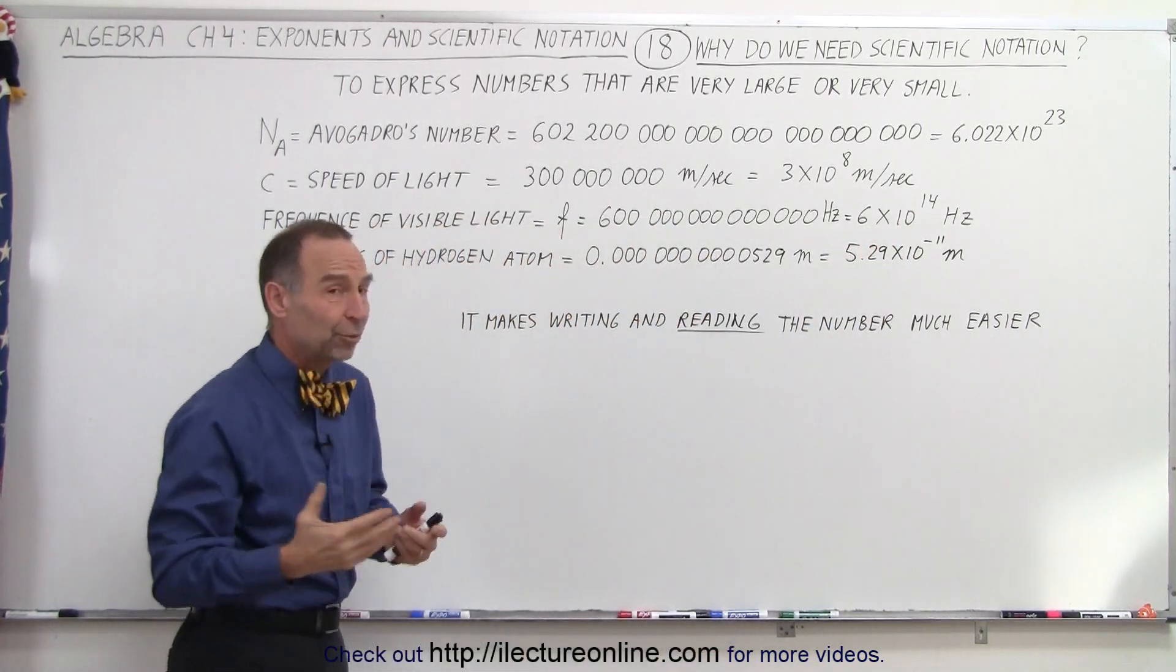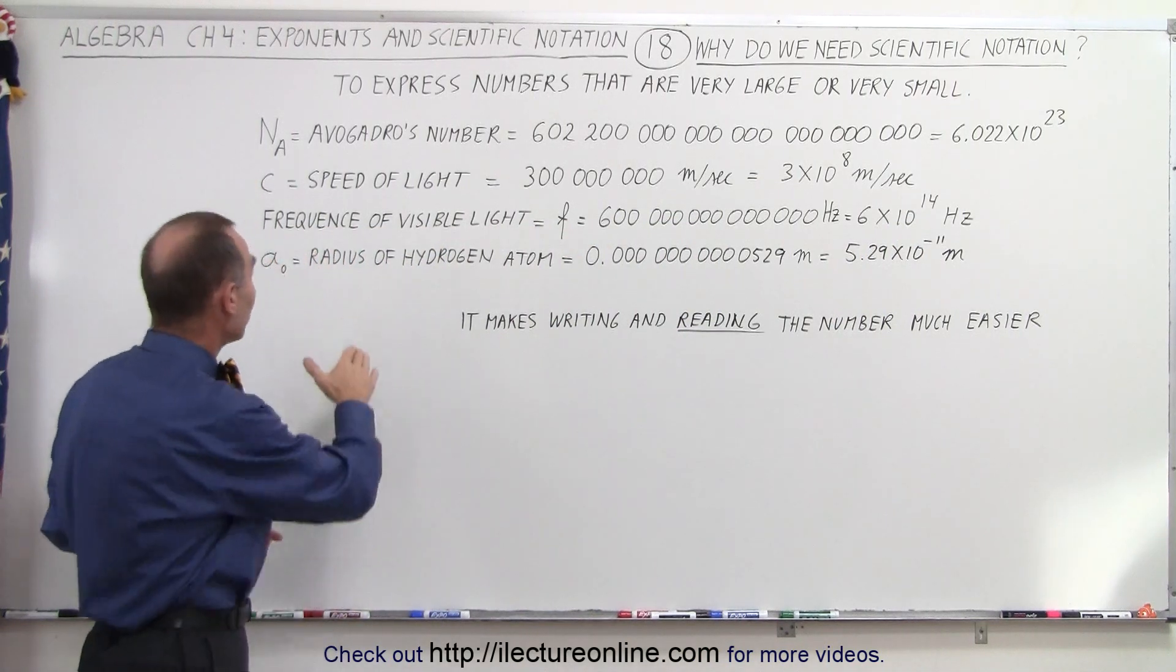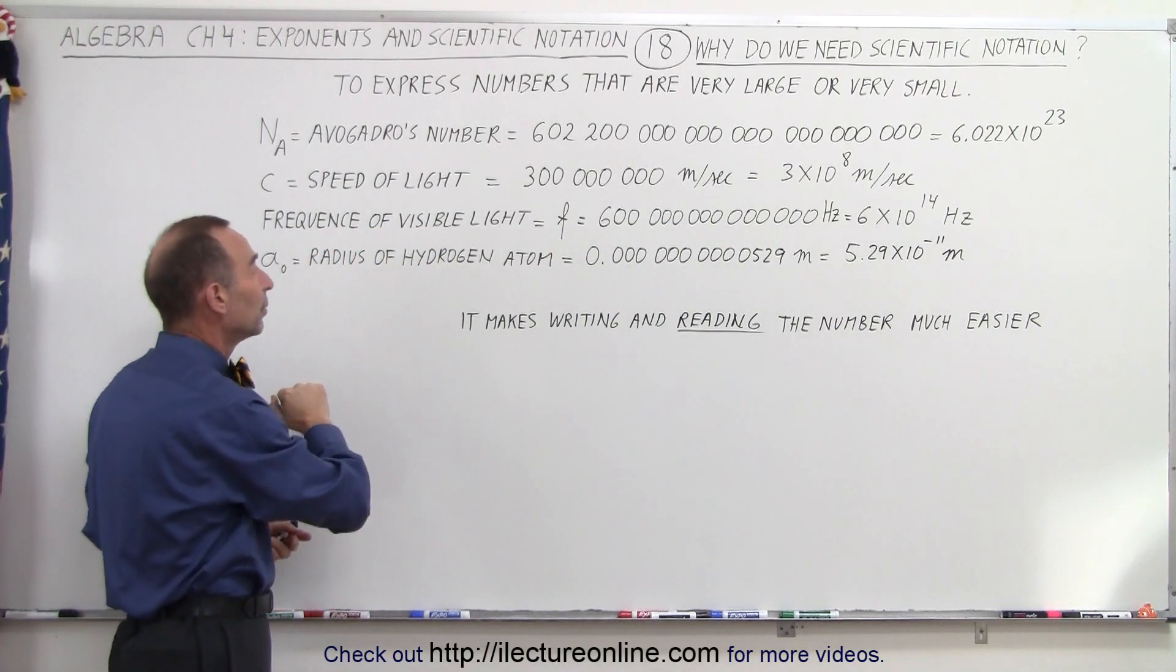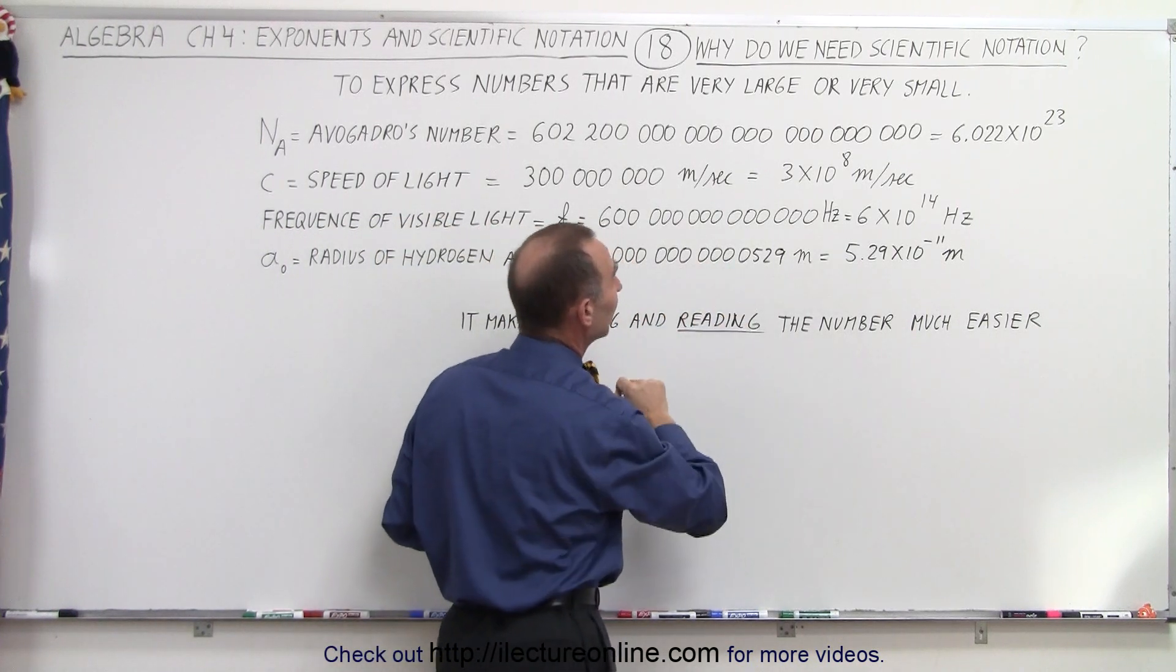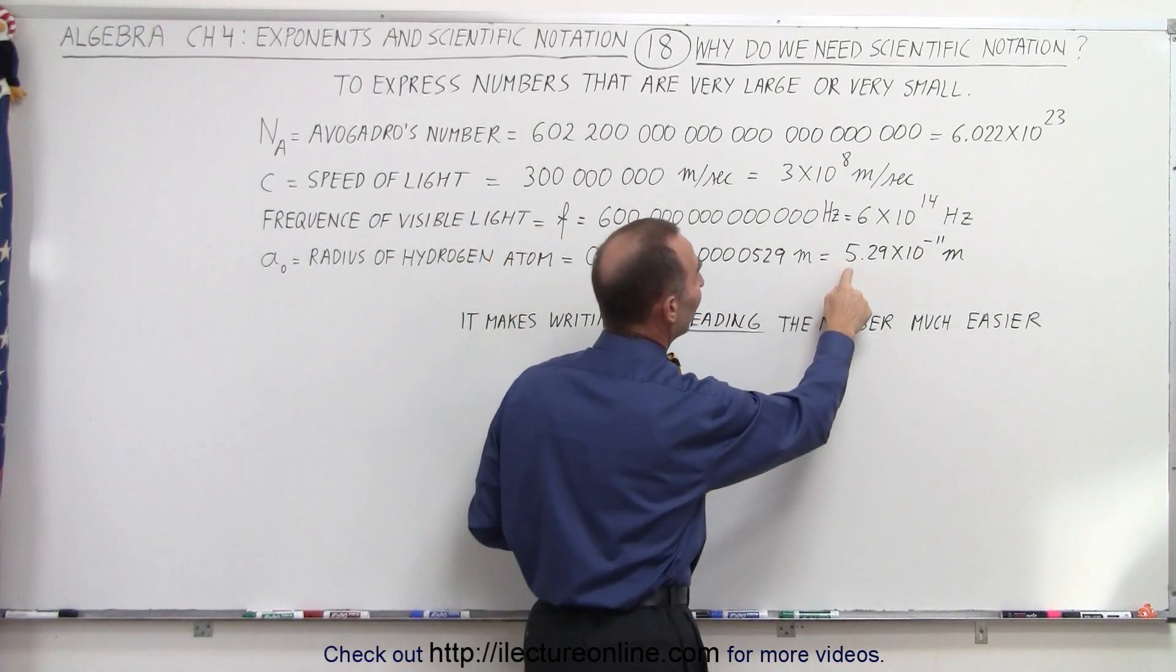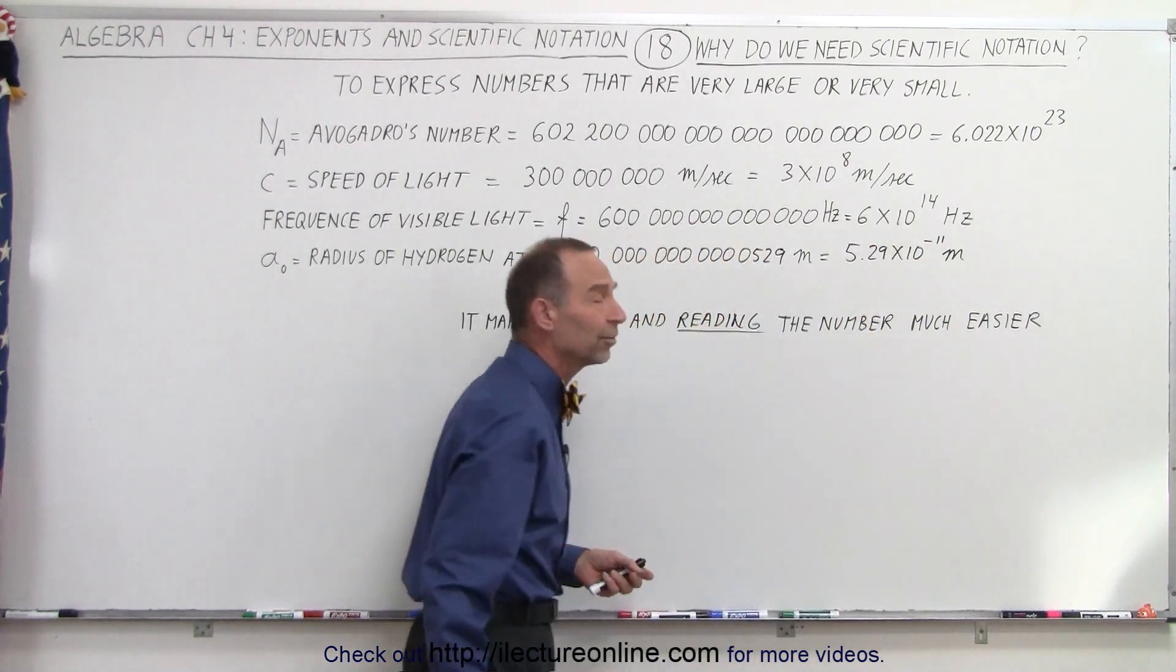Or, if you want to express a really small number, such as the radius of a hydrogen atom, we can write it like this, and you really have to keep track of the number of decimal places, or simply write it as 5.29 times 10 to the minus 11 meters.